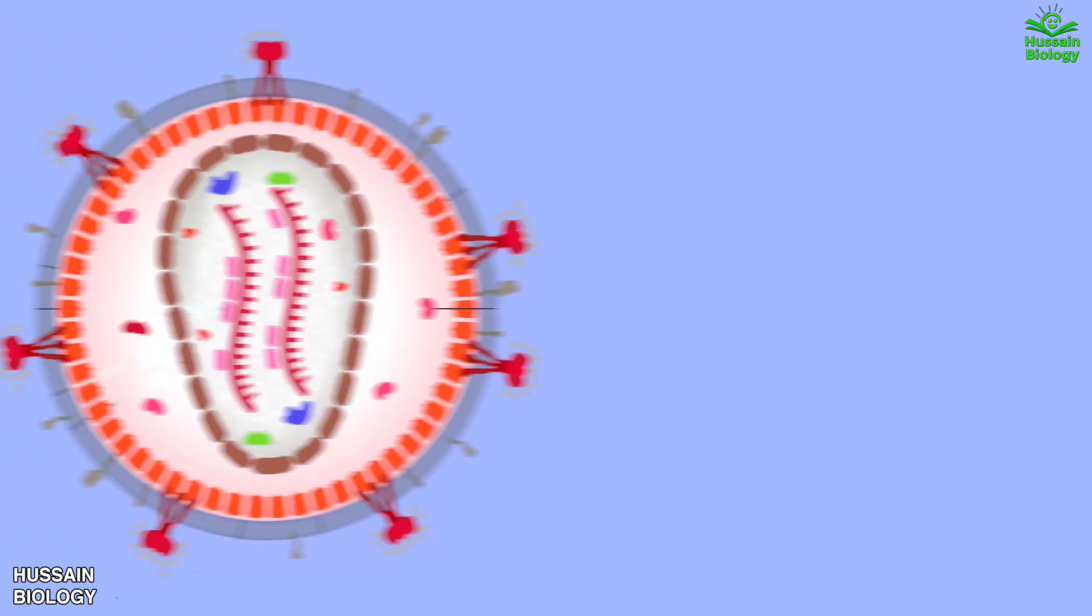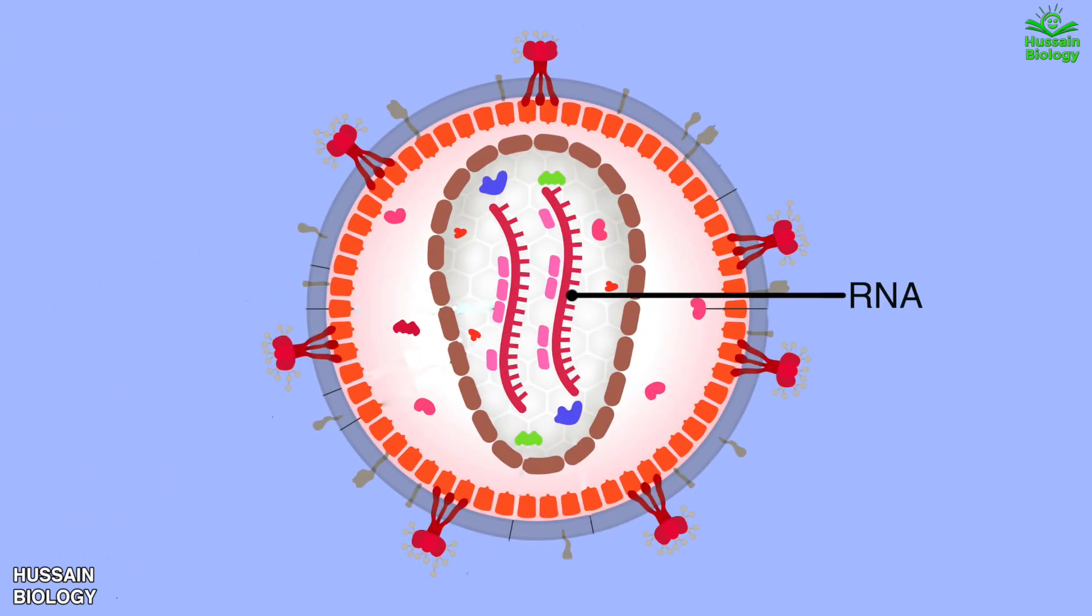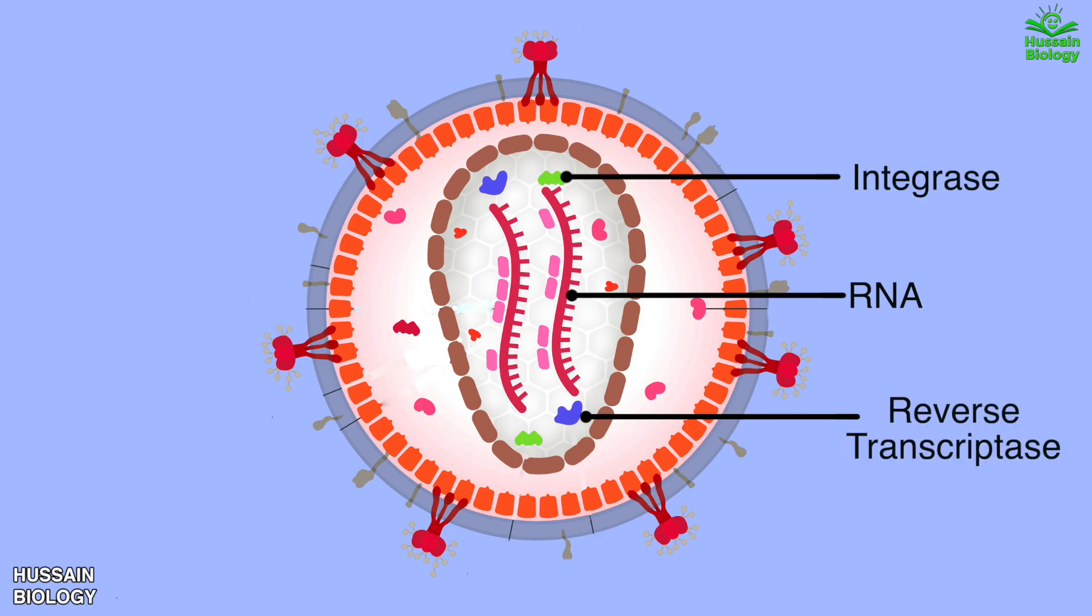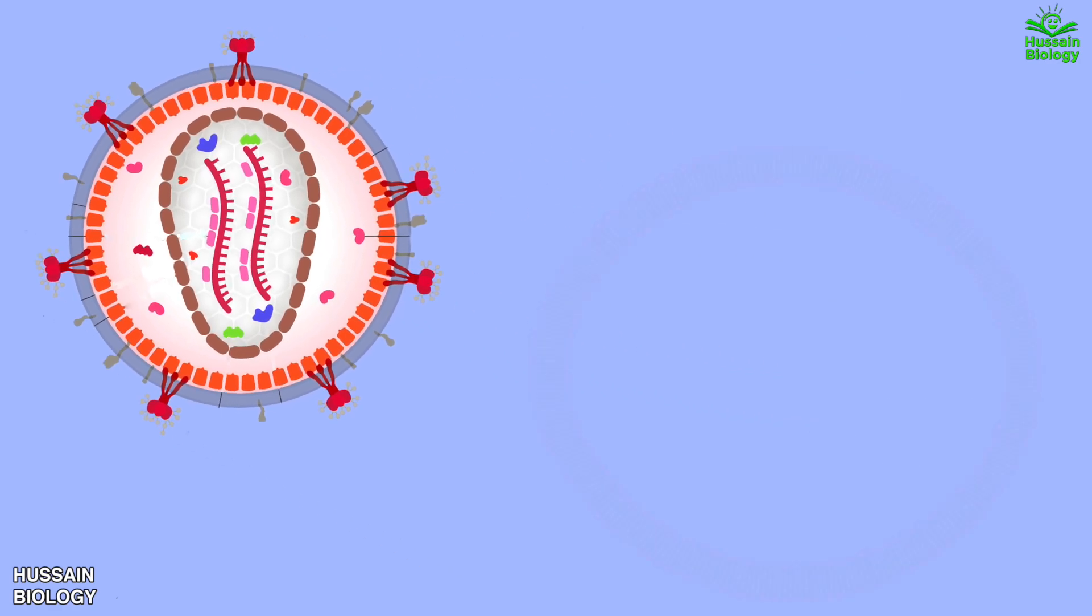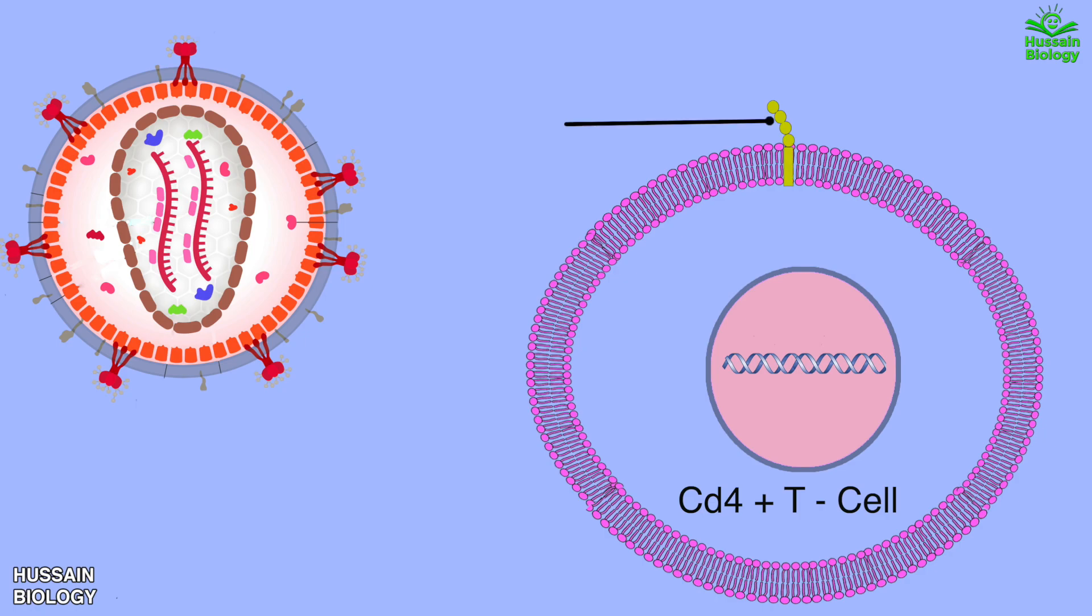Now let's get to the replication cycle of HIV within the immune cells. Here in this diagram we have HIV. It has RNA, some proteins like reverse transcriptase and integrase, and most importantly it has GP120 and GP41 on its surface. On the other hand we have the immune cell with CD4 molecule on it, like T helper cells have, and also the coreceptor on the surface of the T cell, which is CCR5.